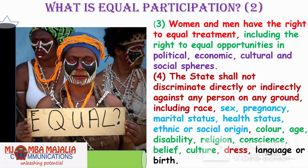The state shall not discriminate on grounds of ethnic or social origin, color, age, disability, religion, conscience, belief, culture, dress, language, or birth. That's why even in your job application or CV you don't have to write your religion, age, or race. If they ask you at a job interview, the Constitution provides that you don't have to disclose that, because employers might discriminate based on those demographic markers.